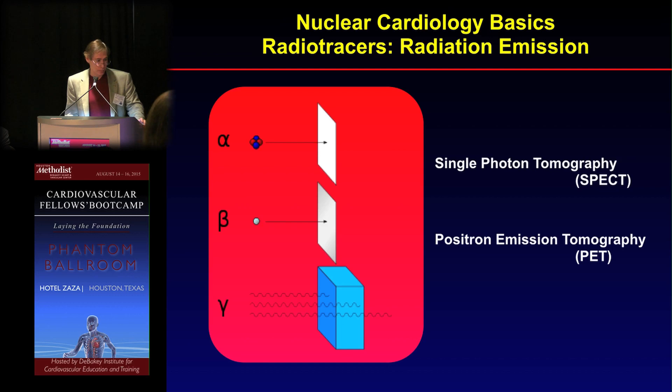We're going to talk about nuclear cardiology and some of the basic concepts. The first concept is radiation emissions. We have alpha particles, which are helium nuclei; we have beta particles, which are electrons; and we have gamma rays.